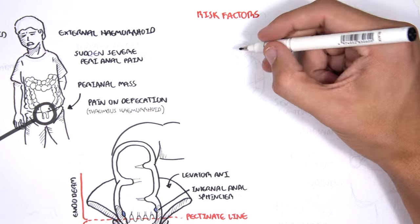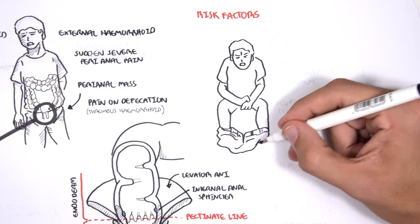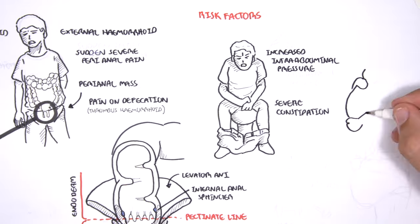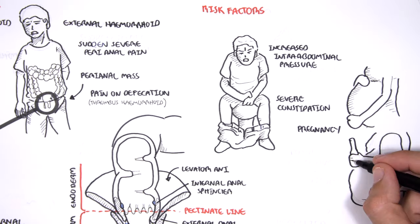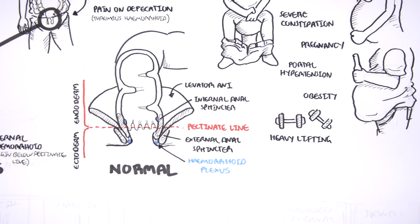The risk factors for developing hemorrhoids include increased intra-abdominal pressure, severe constipation, pregnancy, obesity, portal hypertension, and heavy lifting. All of these essentially cause some form of increase in intra-abdominal pressure, which means more pressure within the abdominal cavity. When you have more pressure, the veins must overcome this pressure as it drains back through the abdominal cavity. Because there's so much pressure in the abdominal cavity, these veins enlarge. The veins being, in this case, the rectal veins, they enlarge.